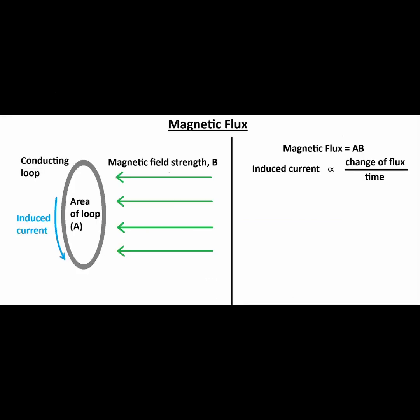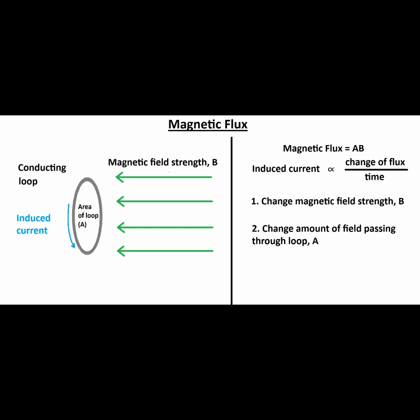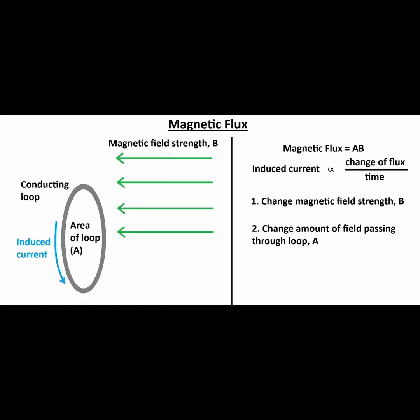There are three main approaches to modifying the magnetic flux to produce an induced current. First, we can explicitly change the magnetic field strength passing through the loop. Second, we can change how much of the magnetic field passes through the loop. This can be done by physically changing the size of the loop or redirecting how much of the magnetic field goes through the loop.